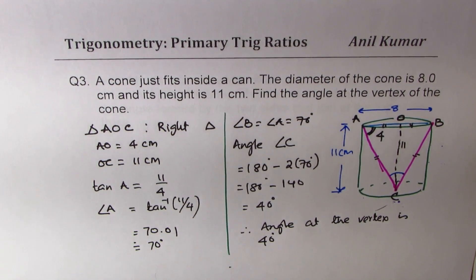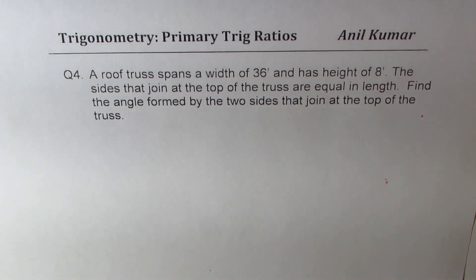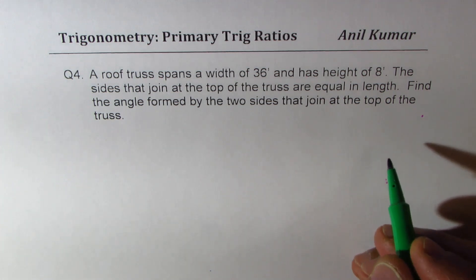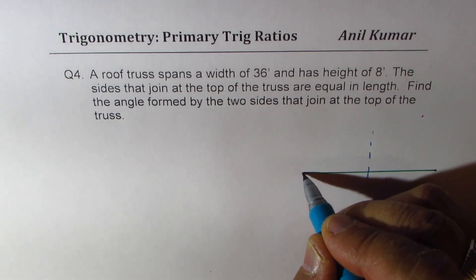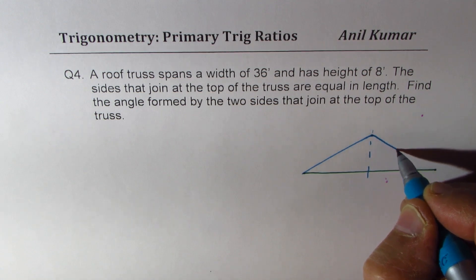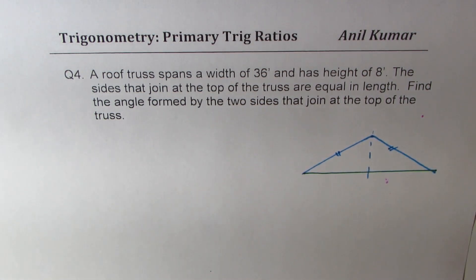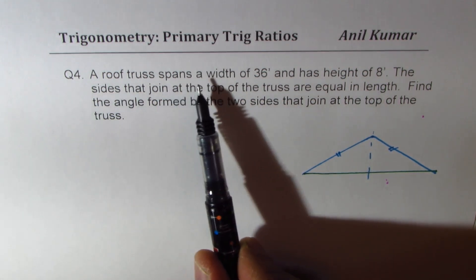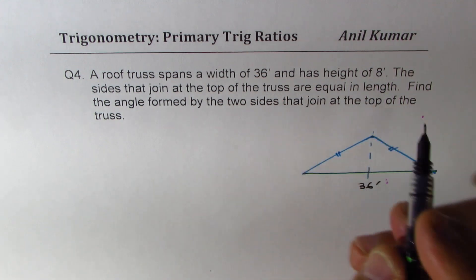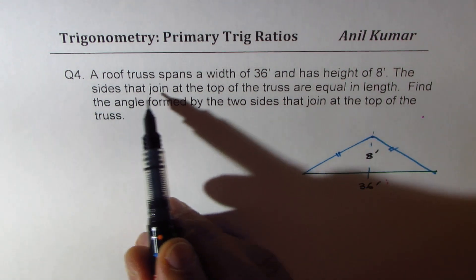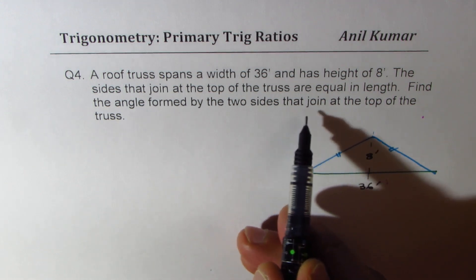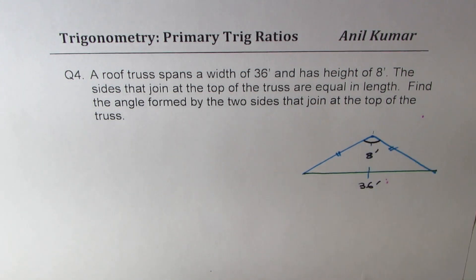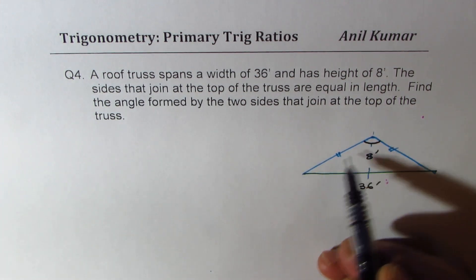Now let's take up the last question, question number four. A roof truss spans a width of 36 feet and has a height of 8 feet. We have a horizontal base and a vertical center, and the two sides join at the top — those two sides are equal in length. This is 36 feet wide and 8 feet tall. We need to find the angle formed by the two sides that join at the top of the truss.